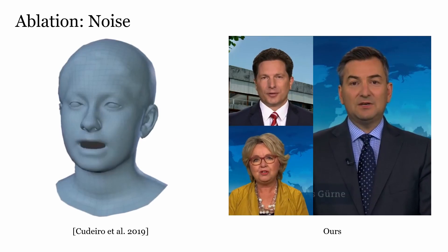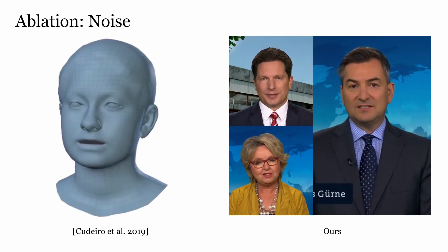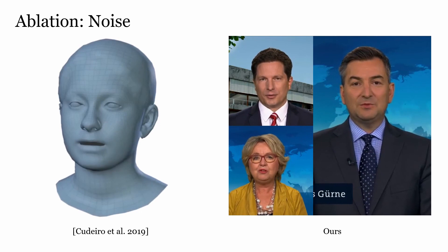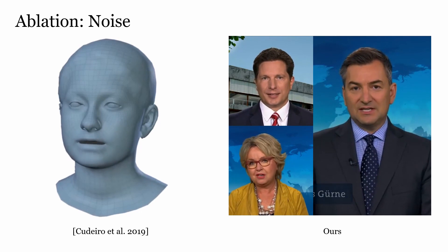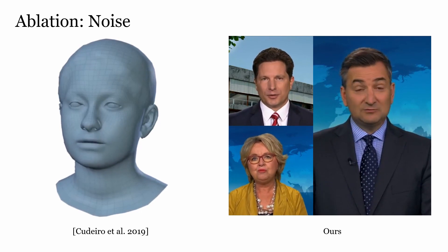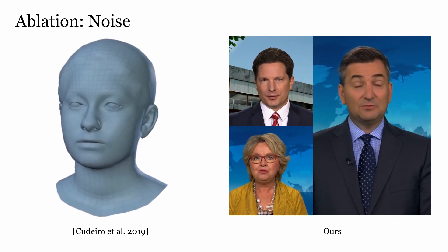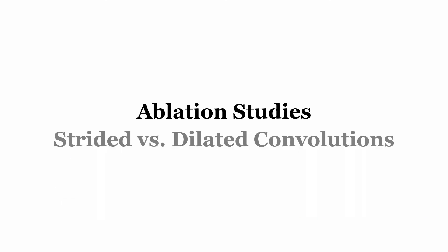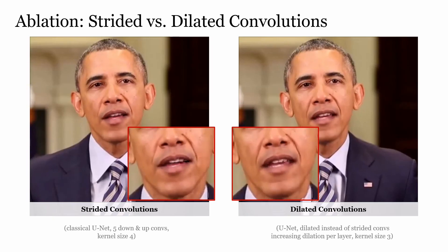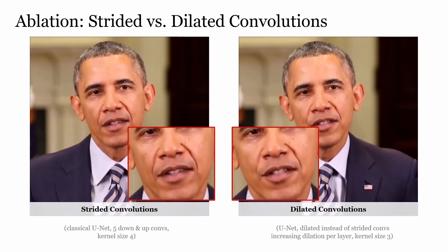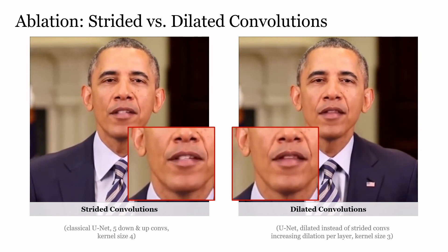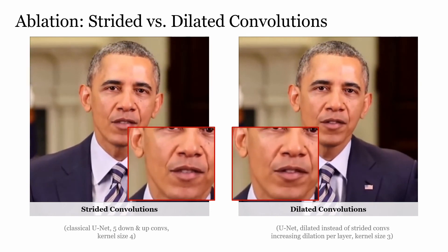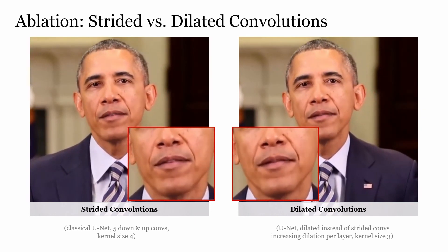A cardboard pattern cut to fit inside holder will help to prevent warping. Dilated convolutions increase the visual quality, but they come with the costs of higher memory consumption and longer training times.